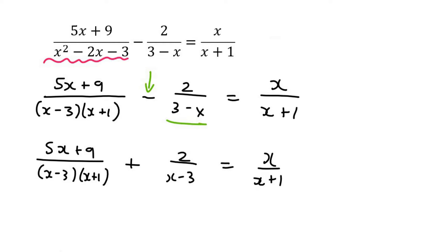So now we can easily say that our lowest common denominator will be x minus 3 and x plus 1. And so if we do the restriction, we would eventually see that x must not be 3 or x must not be minus 1.